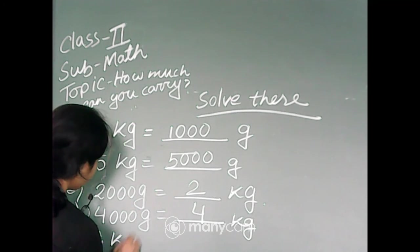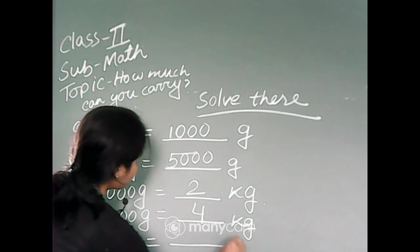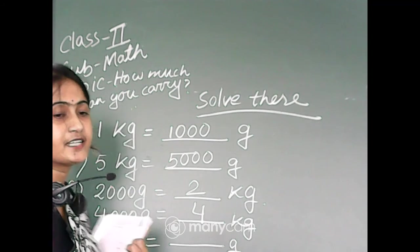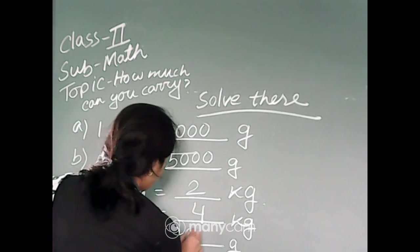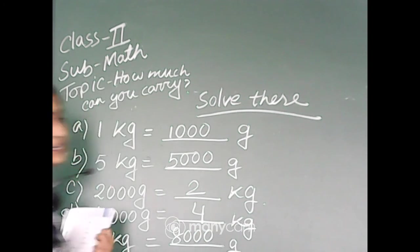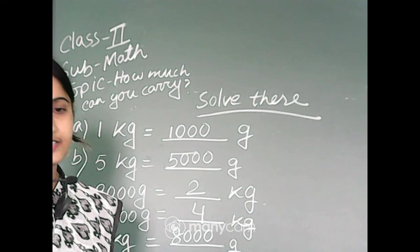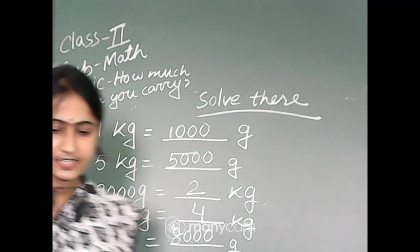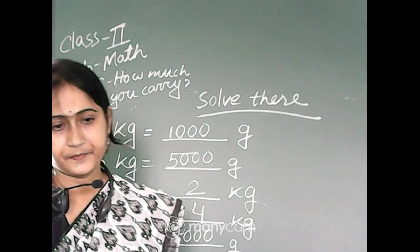8 kg is equal to 5000 grams. Okay beta, you all will practice this maths in your home. Today this much, see you in next class. Thank you, bye.